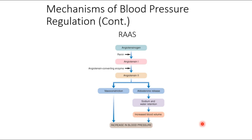Now let's review RAAS — it'll go faster than in your previous course. Renin comes from the kidneys. Your kidneys control urinary output, therefore blood volume, and they detect blood pressure all the time. With low blood pressure, they release renin, which converts angiotensinogen — produced by the liver in an inactive state — into angiotensin 1.